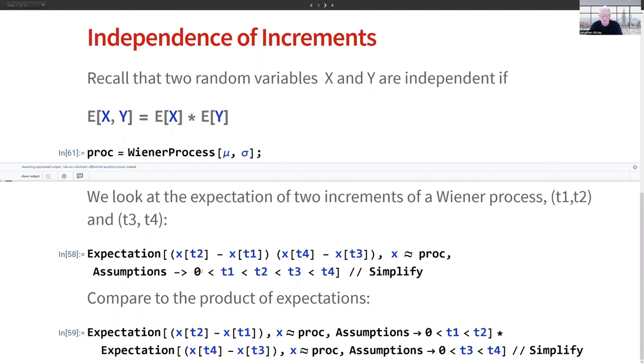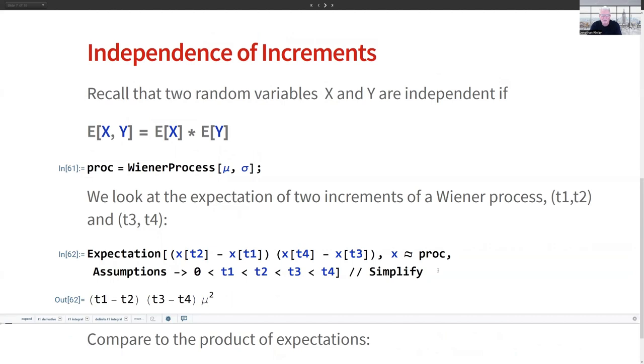So we're looking at the expectation of x of time t2 minus x of time t1 and x of time t4 minus x of time t3, given that x is a Wiener process. And we find that expectation is t1 minus t2 times t3 minus t4 times mu squared.